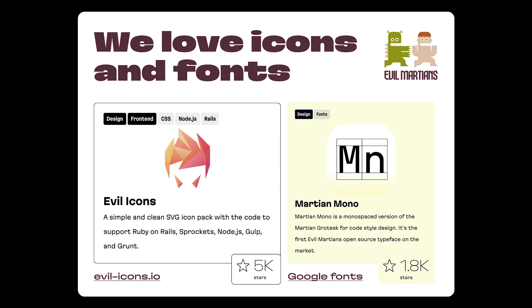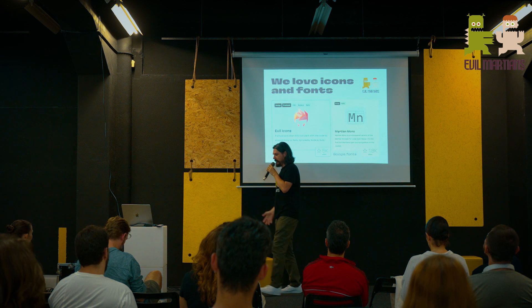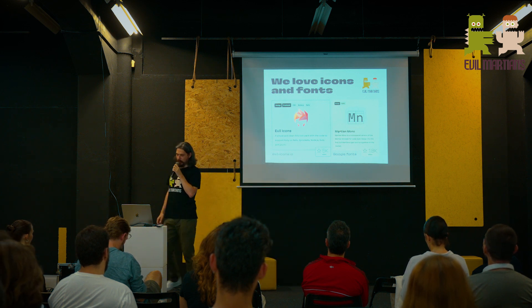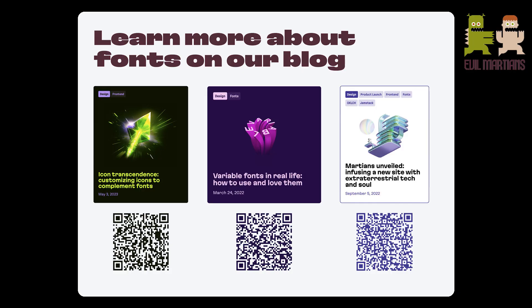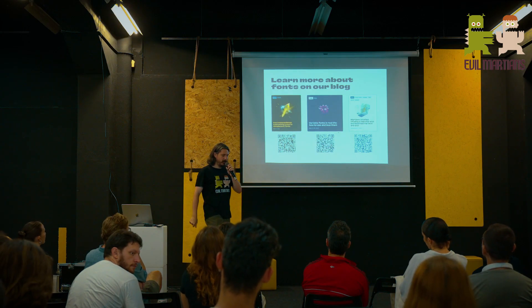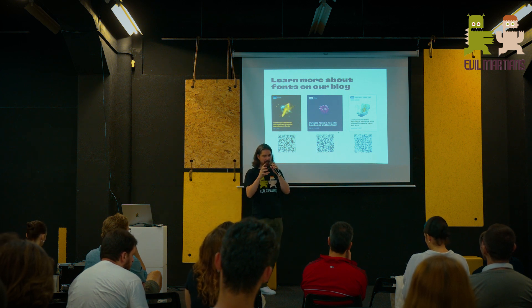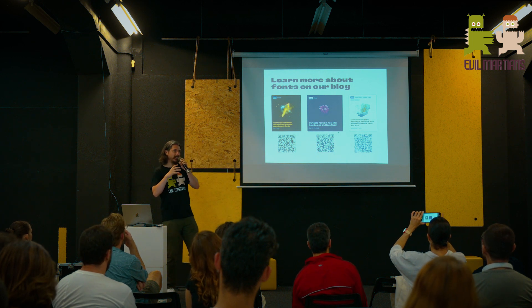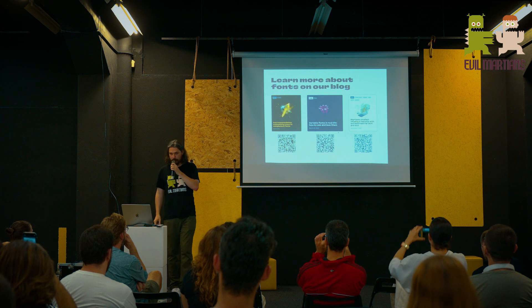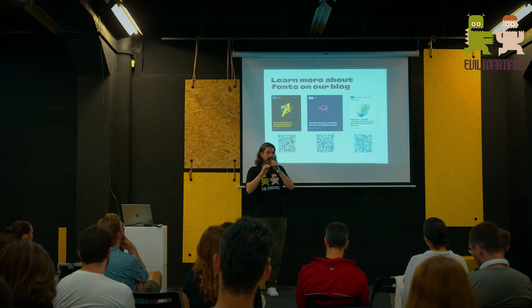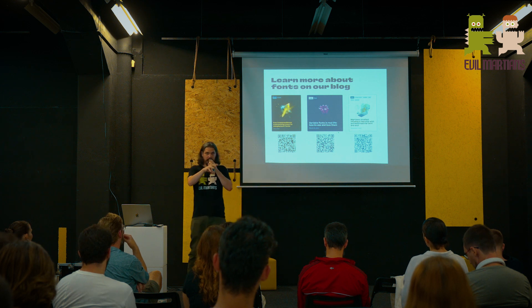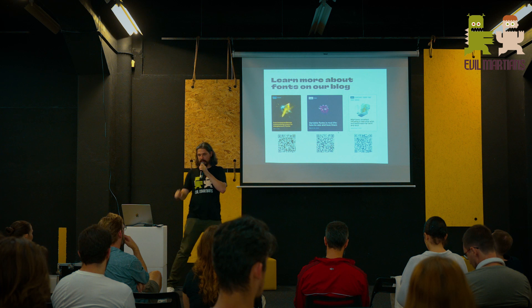Of course, we talk about this because we love icons and fonts. We build our own Evil Icons collection and have our own beloved Martian Mono font, which we use everywhere. We recommend using it. To learn more about fonts, please scan the code and read more about icon transcendence, variable fonts — because the unique characteristics that variable fonts have can also bring a next level of beauty to your project. A third article covers where we built our own unique font and redesigned evilmartians.com, combining unique font nature with unique brand identity. True beauty.